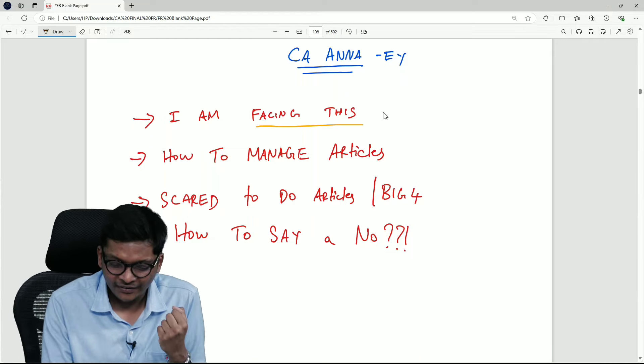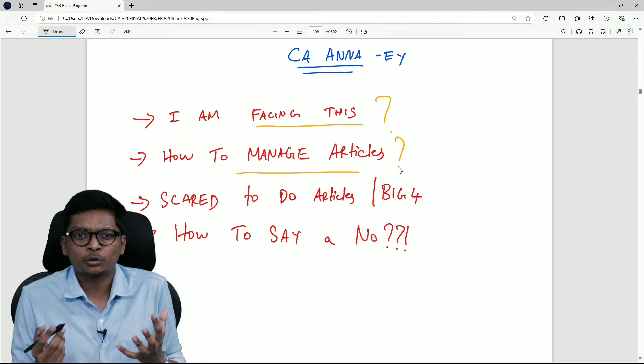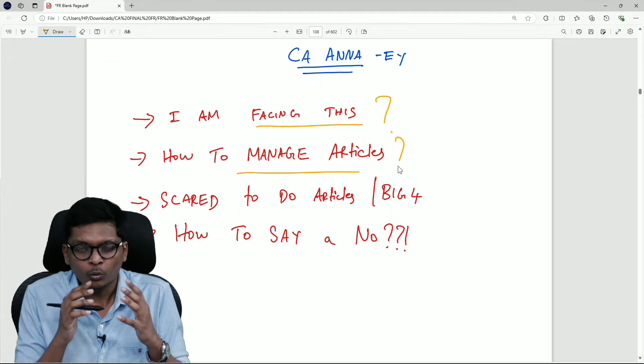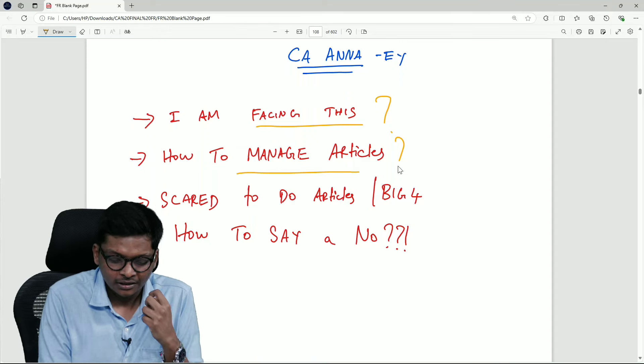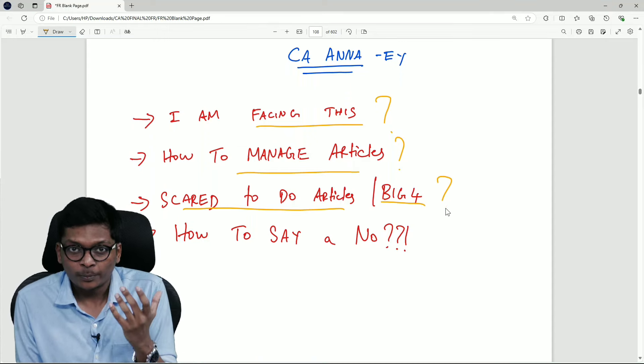They are asking questions like, I am facing this, what should I do? In my articles also, it is like this only. Even if it is not big four, what should I do? I am very scared about it, scared to do articles itself. They are asking, should I even go to big four?